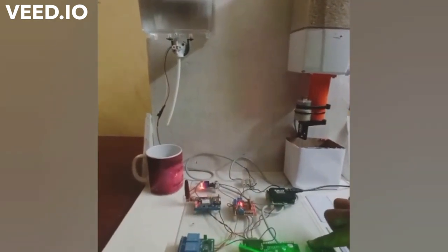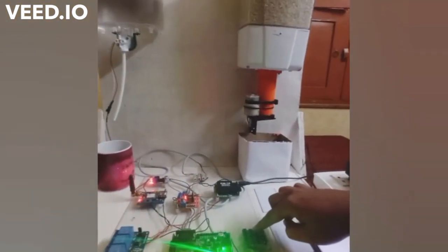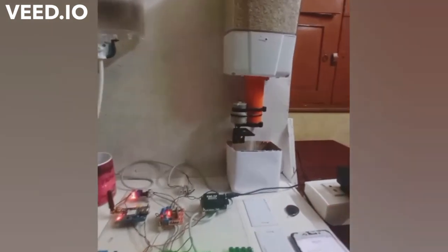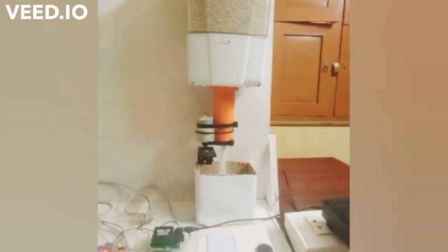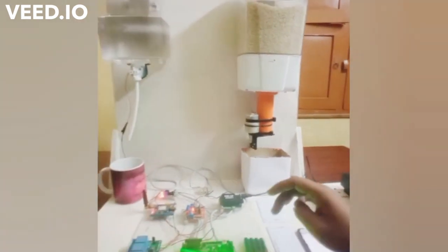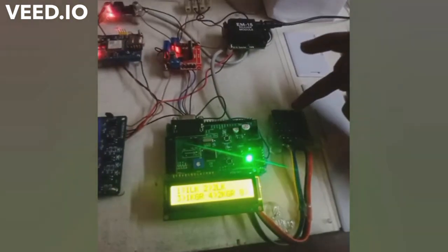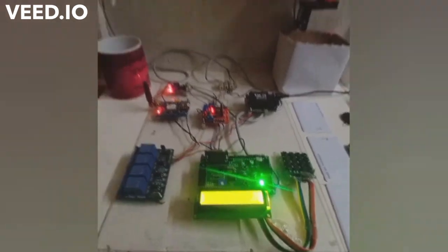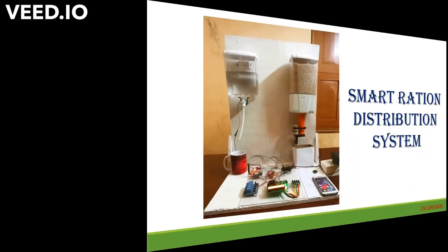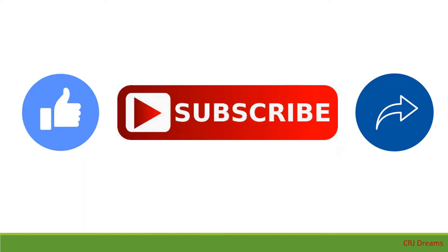The commodity names are displayed on the LCD along with the associated numbers. The consumer presses the corresponding number to dispense the item. For liquid commodities, pressing the number causes the liquid to be dispensed into the container. For food grains, pressing three dispenses the grains into a container. The amount of each commodity is preset in the program so that a specific quantity is given to each consumer. By implementing this project in society, we can help prevent corruption.